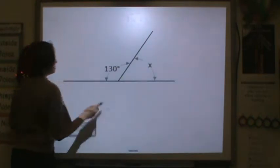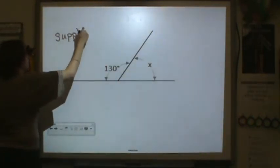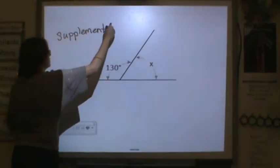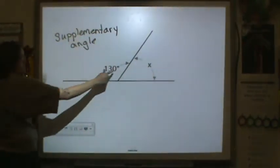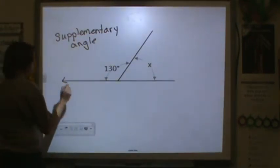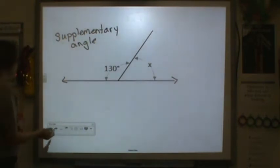So here, in this picture, make sure you draw it, we have a supplementary angle. Because these two angles together make a straight angle, and a straight angle is always equal to 180 degrees. So we know the total is 180.